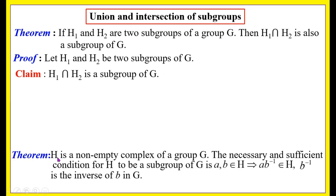We know that if H is a non-empty subset of a group G, then the necessary and sufficient condition for H to be a subgroup of G is: a, b belong to H implies a·b⁻¹ belongs to H, where b⁻¹ is the inverse of b in G. We use this statement to prove that H1 ∩ H2 is a subgroup.